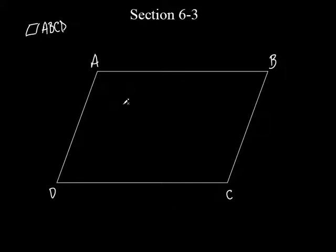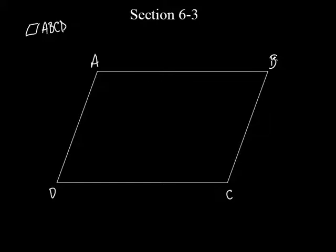What could you not name it? If you started at A, you can't go A to C — you've got to go the ones consecutive, the ones next to that angle. So ABCD or ADCB. That's how you would name a parallelogram.